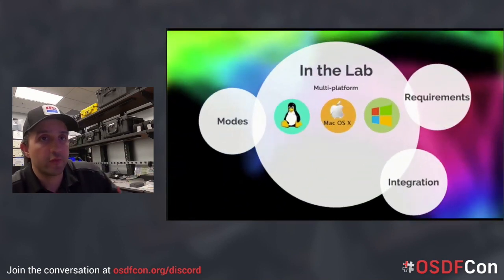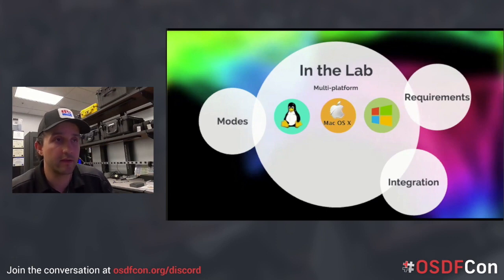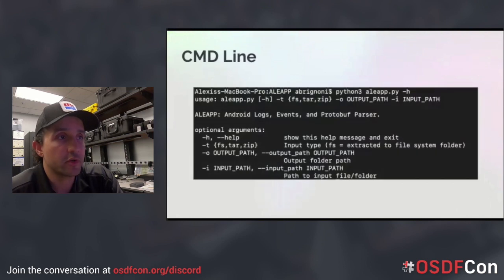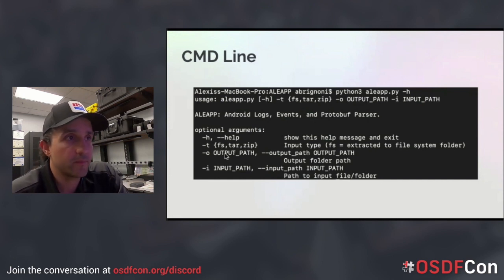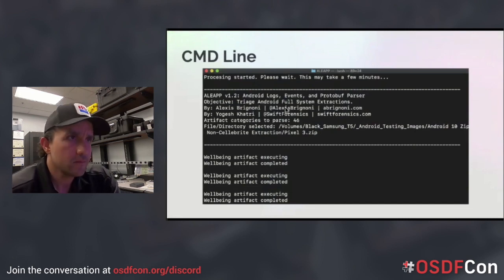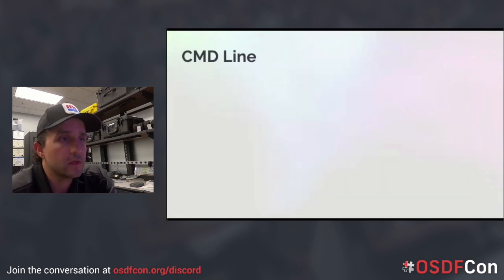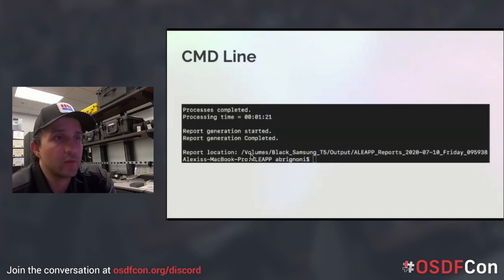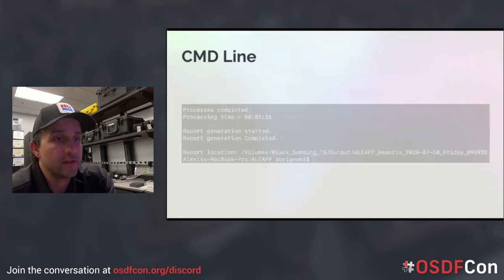In the lab: because it's Python, it's multi-platform. I tested it across different versions. The command line or terminal is most common: just hit help with ALEAP or ILEAP and it will tell you the options. You give it the type — whether it's a zip file, tar file, whatever — the output directory, and the input file path. It runs and you'll see log output on your screen as it parses things. When it's done, it tells you it's completed, how long it took, and where to find the report — which will be the directory you provided. That's the terminal/command-line option, plus the GUI I already showed you.